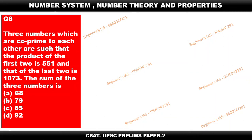Hello everyone, welcome. Let us discuss one aptitude-based question. Three numbers which are co-primes to each other are such that the product of the first two is 551 and the product of the last two is 1073. We need to find the sum of the three numbers. It is given that three numbers which are co-prime — what do you mean by the concept of co-prime?